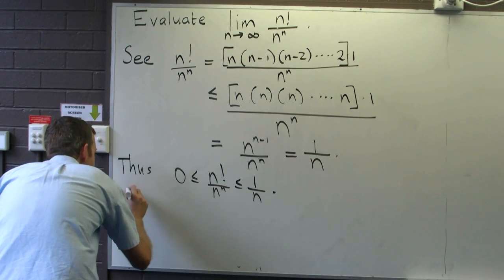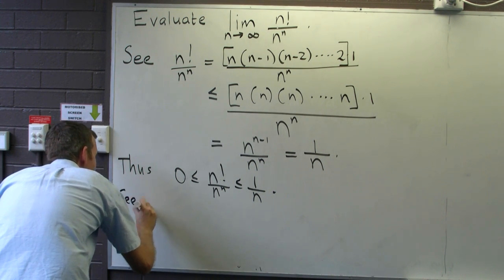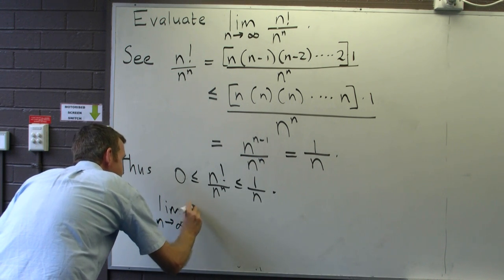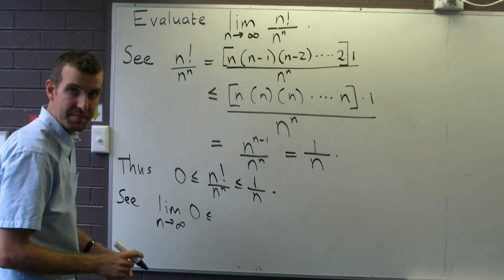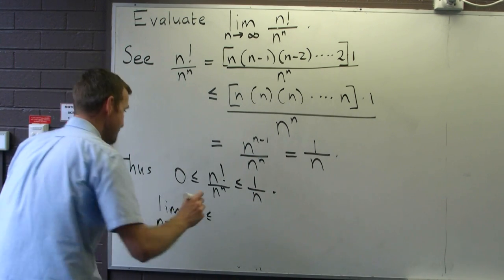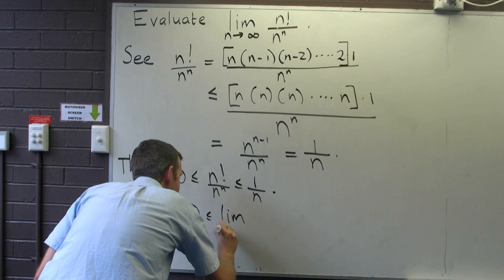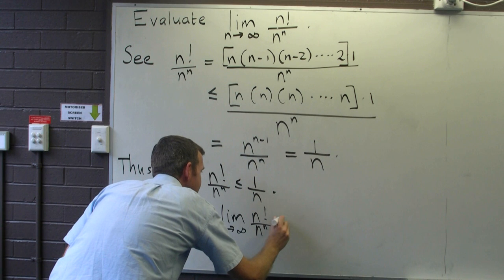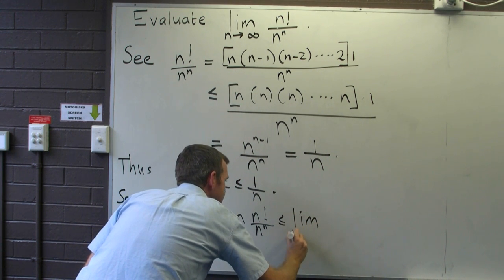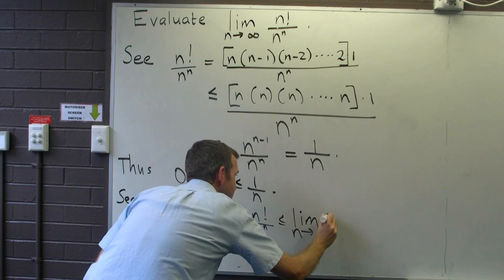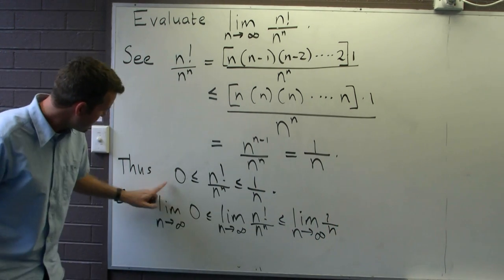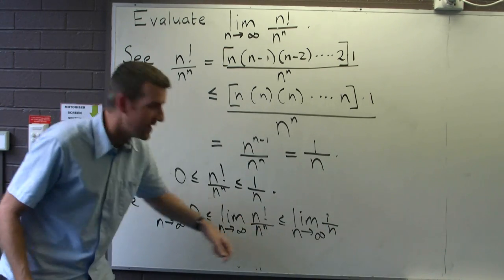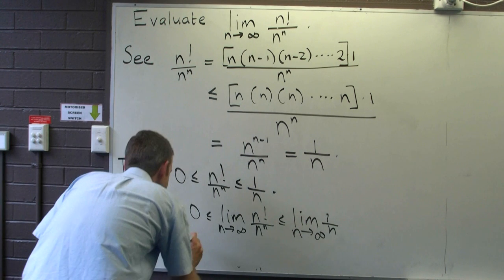Okay? So the limit of the left-hand side is less than or equal to the limit of the middle, which is the thing we want. Okay, so the limit over here is 0. The limit in the middle, well, that's what we want. And the limit of the right-hand side is also 0. So we get...